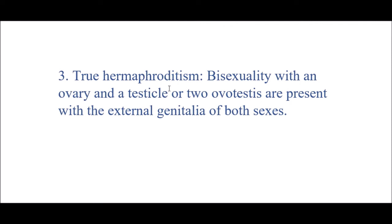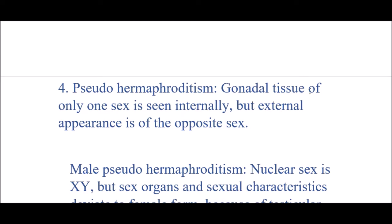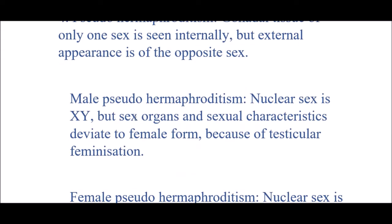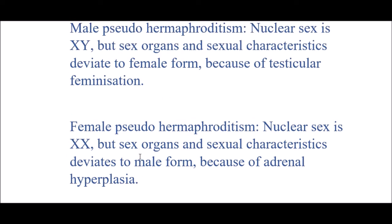True hermaphrodites have bisexuality with both ovary and testis — or an ovotestis — present, with external genitalia of both sexes. Pseudo-hermaphrodites have gonadal tissue of only one sex internally but the external appearance is of the opposite sex. Male pseudo-hermaphrodite: nuclear sex is XY but sexual characteristics deviate to female form due to testicular feminization. Female pseudo-hermaphrodite: nuclear sex is XX but sexual characteristics deviate to male form due to adrenal hyperplasia.